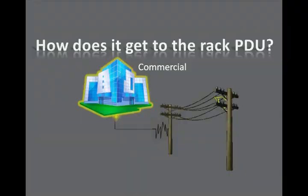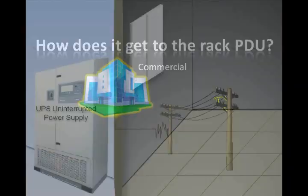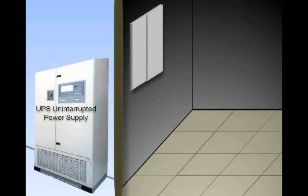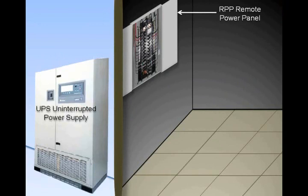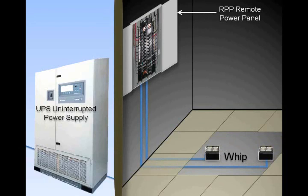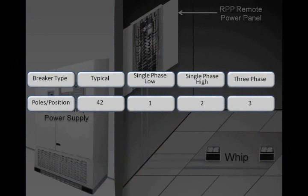The last terms to discuss deal with how power is supplied from the utility all the way to the rack PDU. In a data center, power is fed from a central source such as the utility or a building UPS to a remote power panel, also known as an RPP. An RPP has a breaker panel similar to the one found in your house. The pole or breaker position on the breaker panel connects to a whip, which on the other end will have an outlet or series of outlets. Different levels of power require different types of breakers. A typical breaker panel has 42 positions or poles. A single-phase 120-volt breaker will take up one pole, a single-phase high-line breaker will take up two poles, and a three-phase breaker will take up three poles.